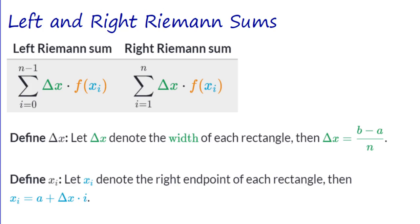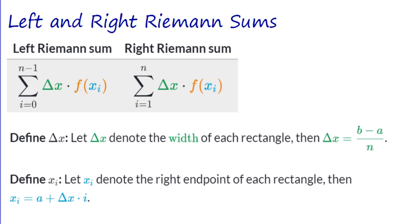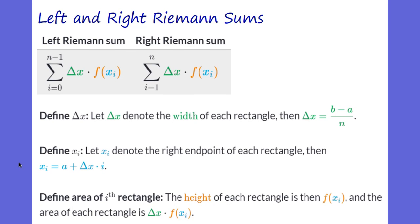The xi, or x naught, denotes the right endpoint of each rectangle. x naught equals a, the starting point, plus delta x times i. And f(xi) is the height of each rectangle. So we're doing delta x (the width) times the height f(xi) and adding them all up. The right Riemann sum starts at i equals 1, going to n — width times height, the area of all rectangles added up.